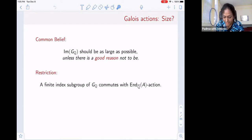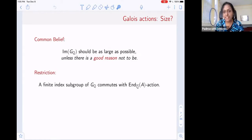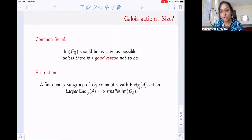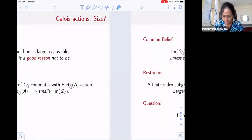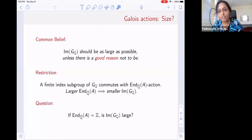A finite index subgroup of GQ commutes with endomorphisms. If you're thinking about this very concretely in terms of matrices, this is saying that the only matrices allowed are matrices that commute with certain other matrices. The general philosophy is larger the geometric endomorphism ring, the smaller the Galois image should be. Fewer matrices you can get. That's all very well, that's a nice principle. But it's a different matter to actually prove.